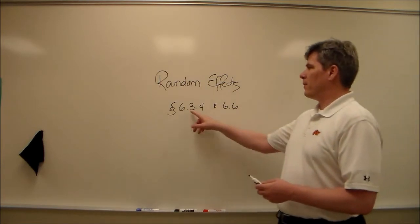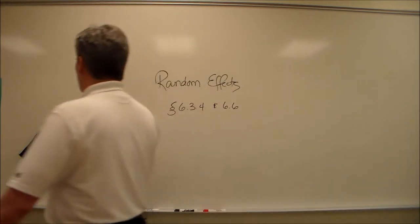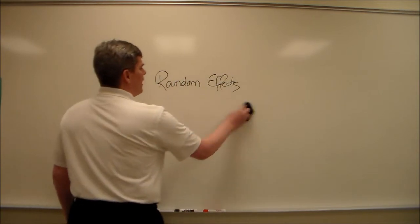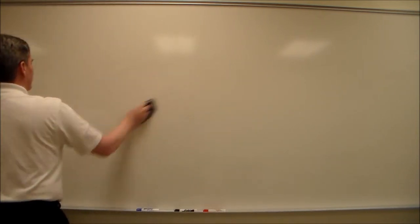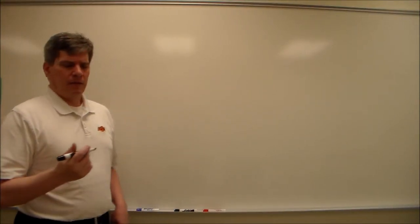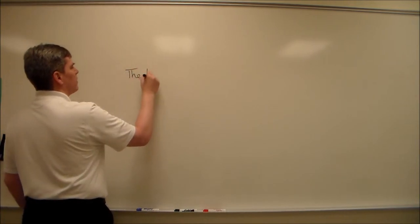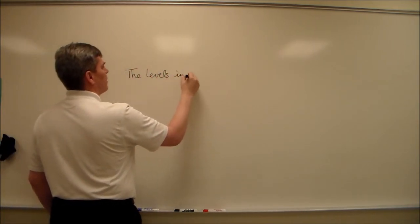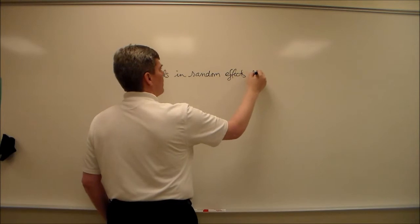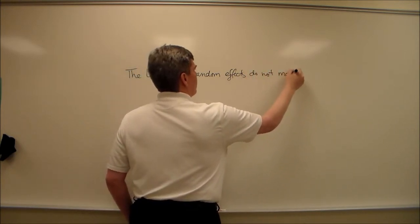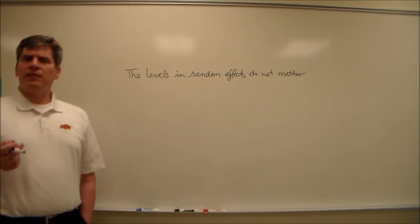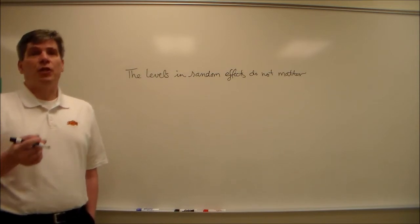Section 3.4, not 3 and 4. This is where random effects are introduced in the book. It gives a good overview. The key to understanding random effects is that the levels in random effects don't matter. That's because the levels are a subset of a much larger population.